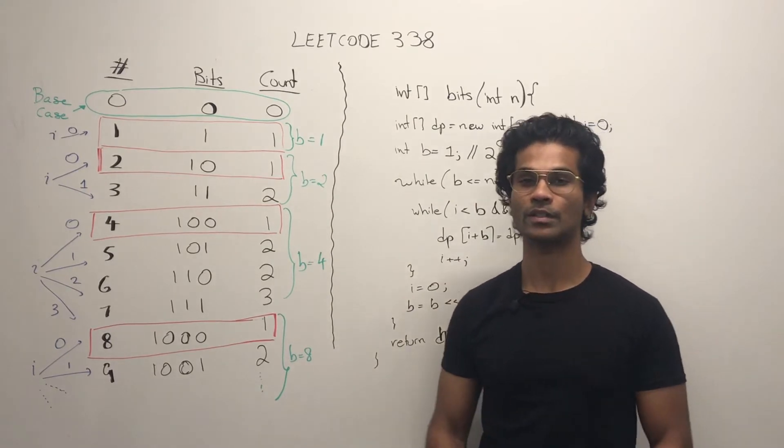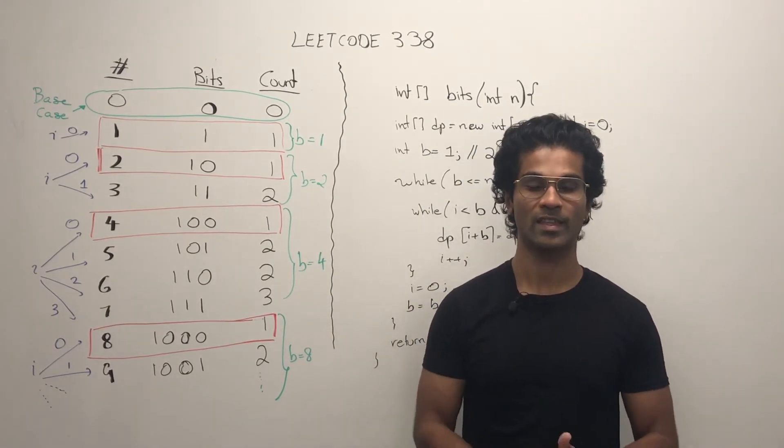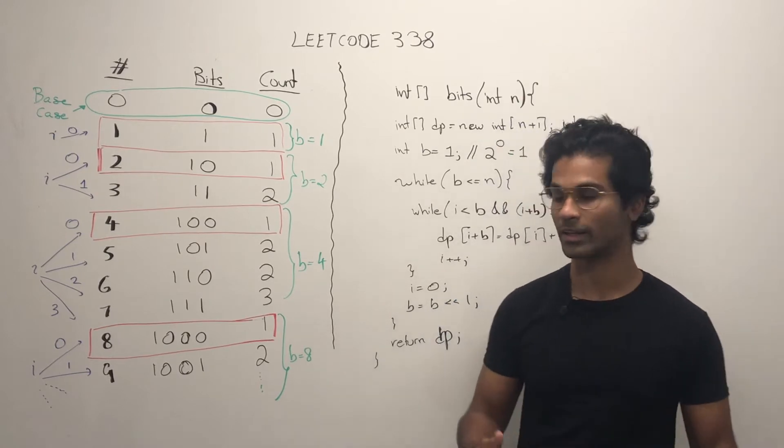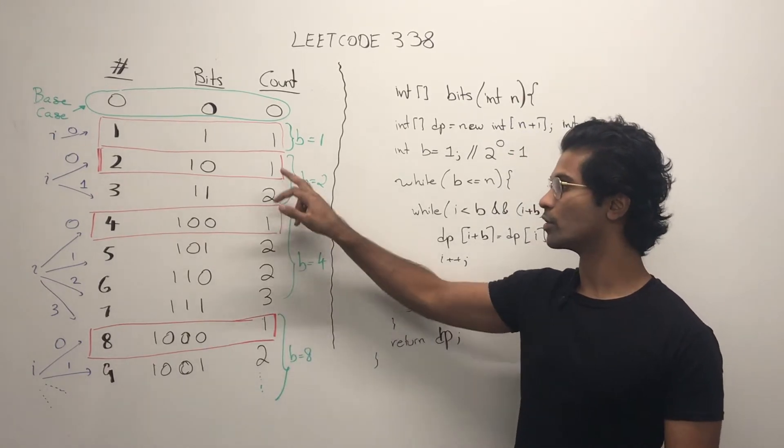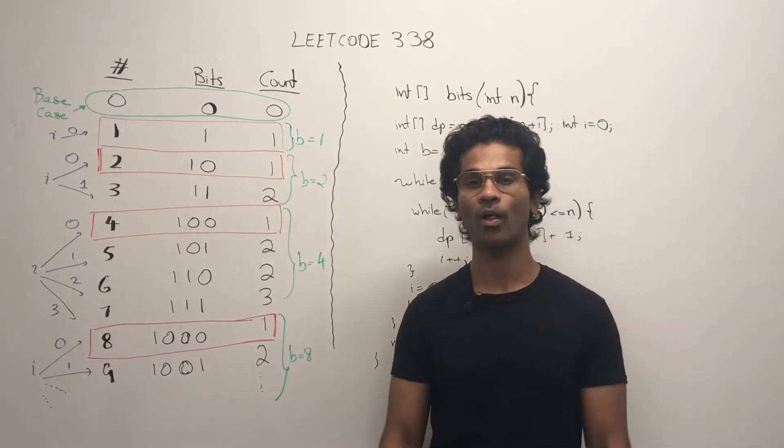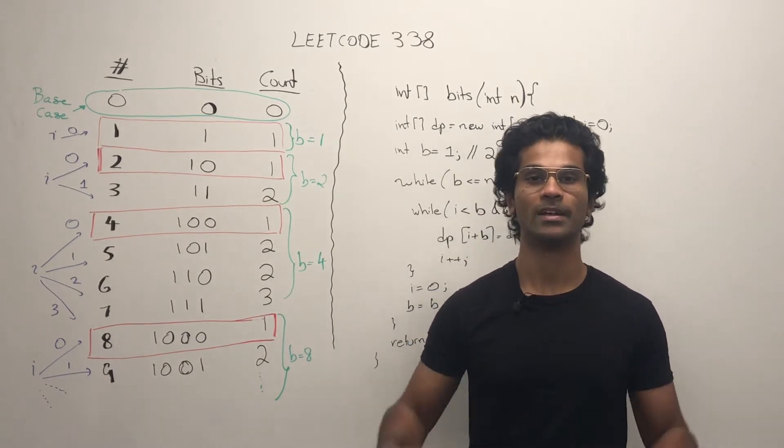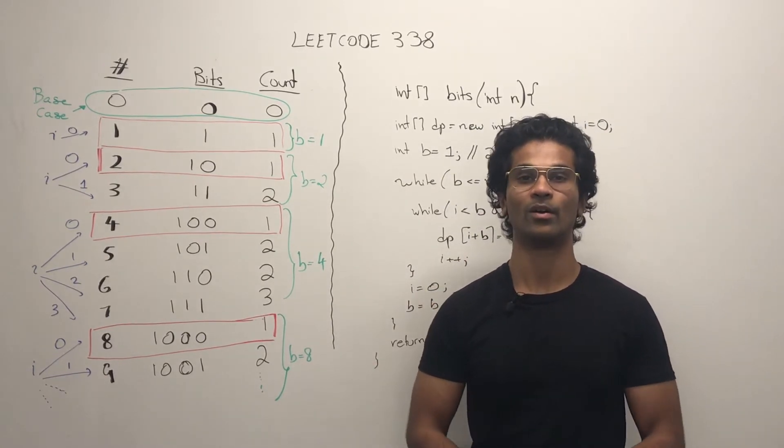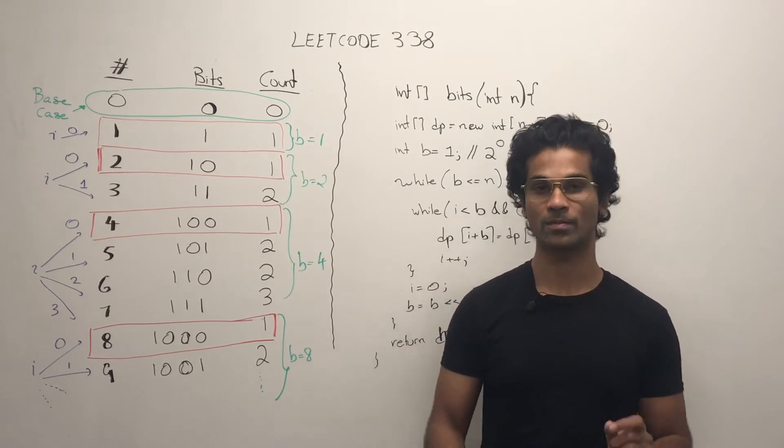What you'll notice is for the powers of 2, the set bits is 1 and I've highlighted them in red. So 8, 4, 2, 1 all have 1 as a set bit and in dynamic programming we usually have a base case or something like that.